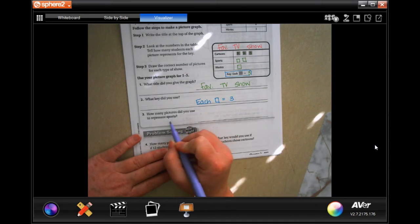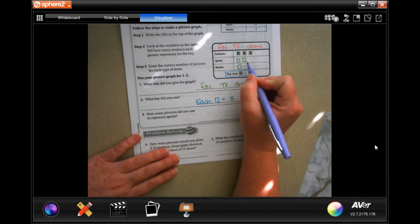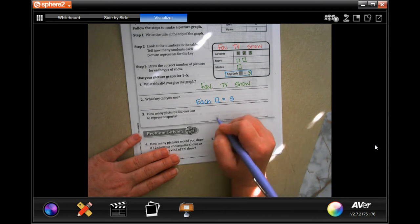How many pictures did you use to represent sports? How many boxes? Two boxes for two pictures.